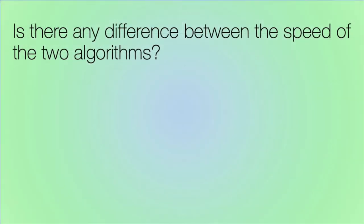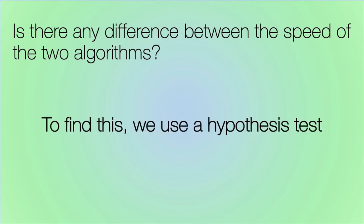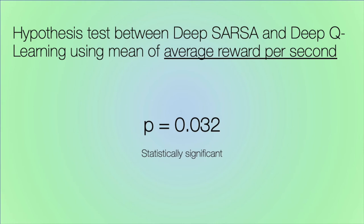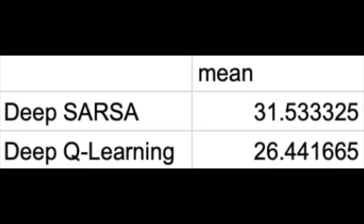Now we must ask: is there any difference between the speed of the two algorithms? To answer this question, we use a hypothesis test. After running a hypothesis test to compare the reward per second data for DeepSarsa with DeepQ Learning, we find that the p-value is 0.032, which is less than 0.05. Therefore, it seems like there may be a significant difference in learning speed. Because we use a two-tailed test, we don't know which way the difference lies. However, based on the aggregate statistics, we posit that the significance is in the favor of Sarsa.